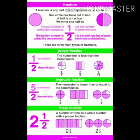Now we will discuss about fractions. A fraction is any part of a group, number, or whole. One circle has been cut in half — a half is a fraction. We write one half as 1 by 2. The top number is called the numerator; it is the number of parts we have. The bottom number is called the denominator; it is the total number of parts the whole is divided into.